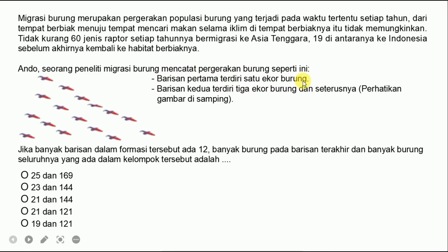Barisan pertama terdiri dari satu ekor sesuai dengan yang ada di gambar. Kemudian barisan kedua terdiri dari tiga ekor burung dan seterusnya. Baris kedua ada tiga, kemudian baris ketiga ada lima.